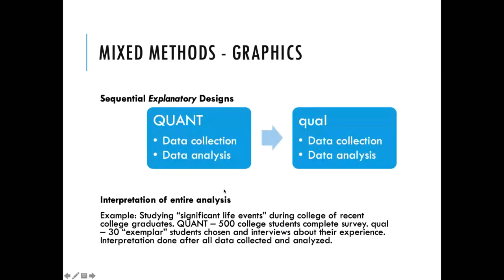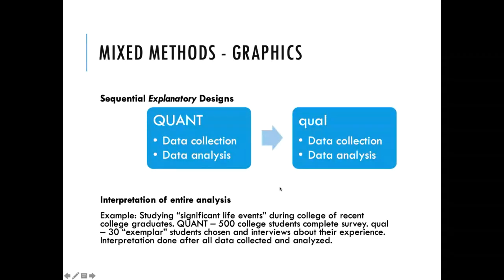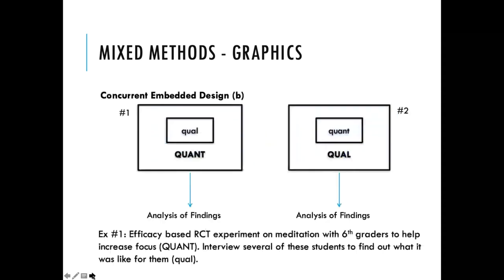For sequential mixed methods graphics, you'll have boxes side by side. If it's quant-heavy, it's called an explanatory design; if qual-heavy, it's called an exploratory design. Here's an example of a concurrent graphic: you're collecting both at the same time. In this case it's embedded — one method is embedded within the other — and the analysis of findings is where it's being mixed.